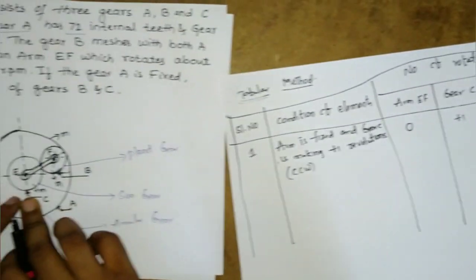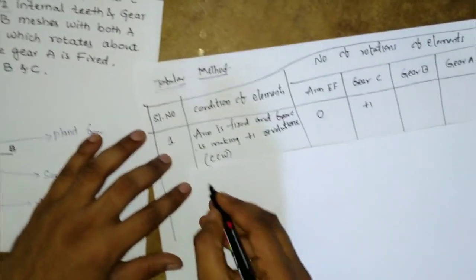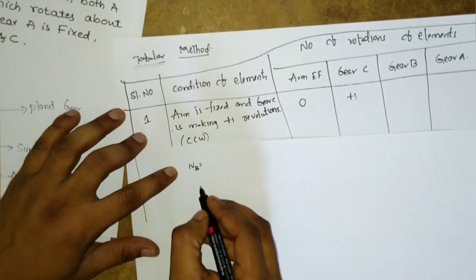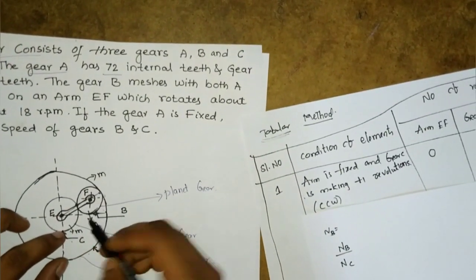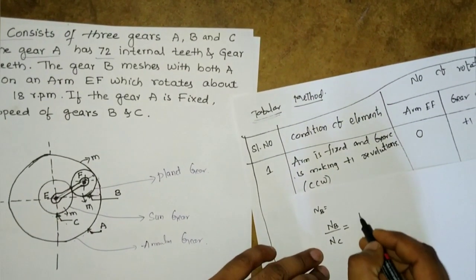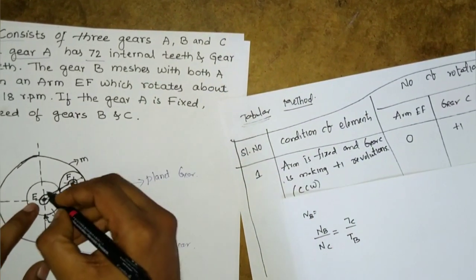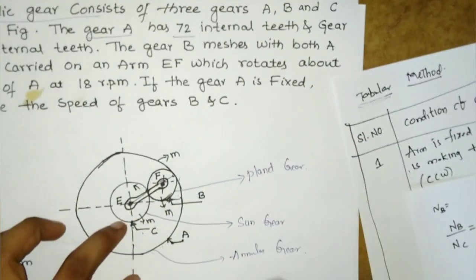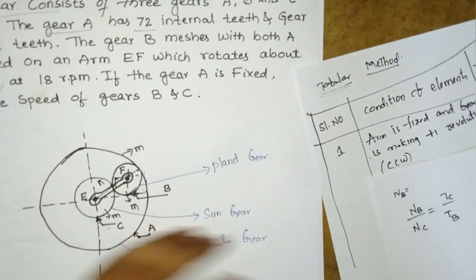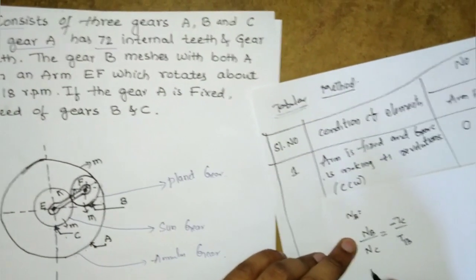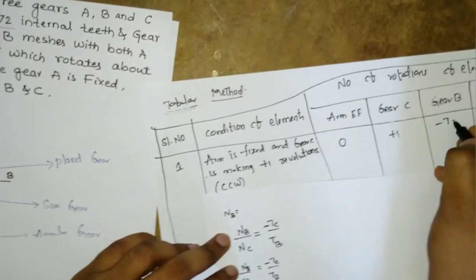For gear B: since gear B and gear C are in mesh, NB/NC = −TC/TB. The negative sign is because they rotate in opposite directions. Since NC = +1, we get NB = −TC/TB.